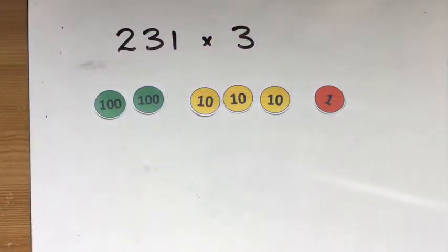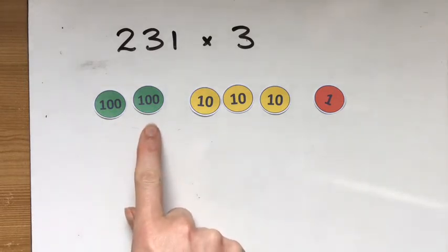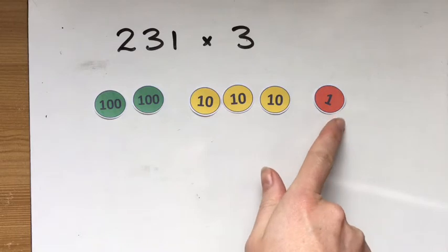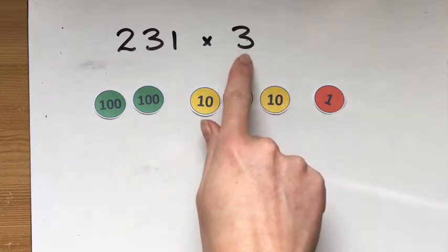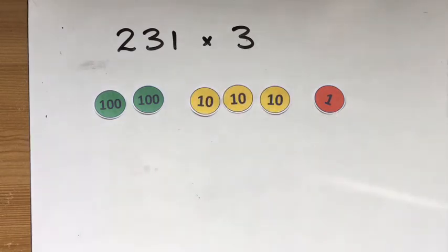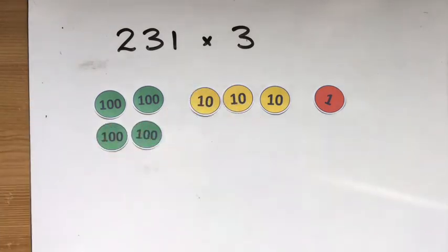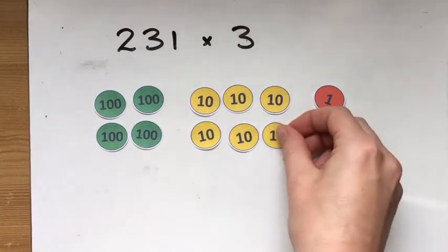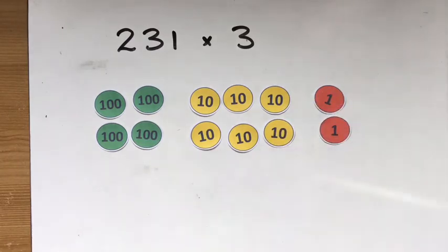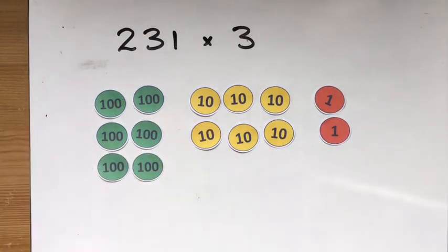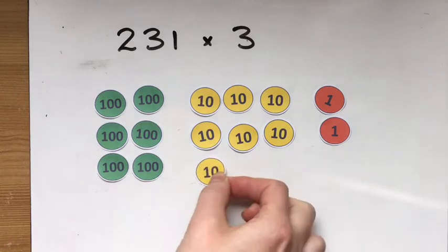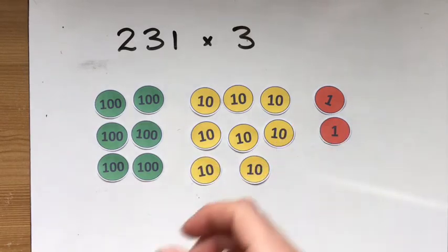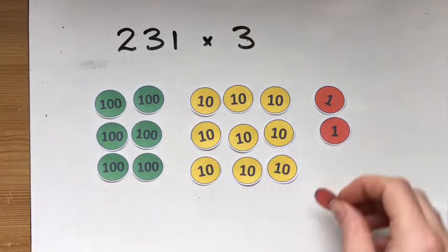Let's get started with some multiplication. So for example here, I've set out with my place value counters 231 and I need it three times. So just like I would with an array for smaller numbers, I'm going to get my 231 a second time and 231 a third time.